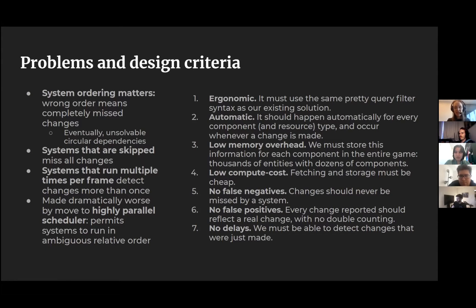If you're running systems multiple times per frame — say you're trying to process input faster — those will also say, I've noticed that you've changed which buttons you're pressing 15 times, and then it'll do the work 15 times, and again it won't work. All of this really became a lot worse with the scheduler changes. The schedule is now even more automatically parallel — systems will run in parallel with each other automatically as long as they're not accessing the same data mutably. This is great, except this whole system-ordering issue becomes so much more important, and you'll end up with non-deterministic messes in your code breaking all over the place.